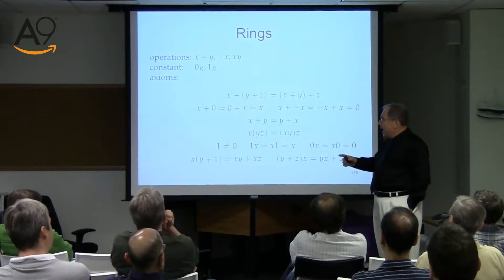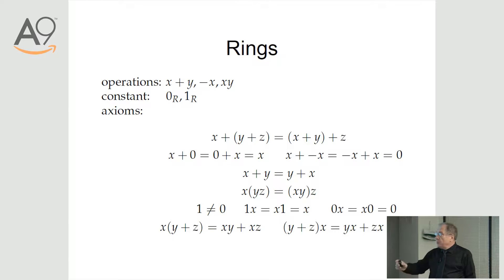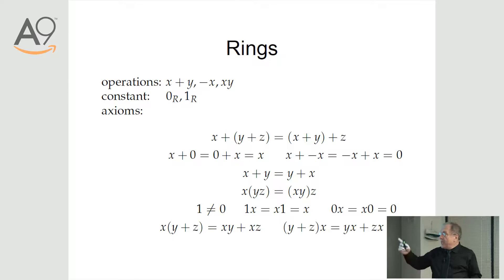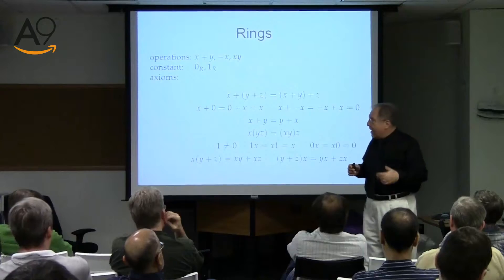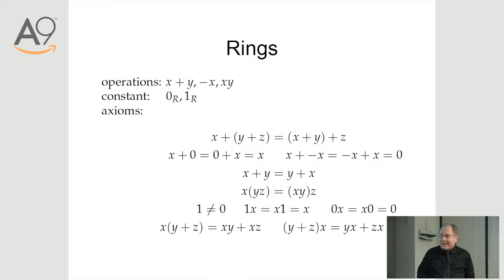Let us see what rings are. Like groups, we describe them by their operations. With groups we had plus and unary minus; we still have them. Every ring is an additive group with operation plus, and moreover it's an abelian group — plus always commutes. There are no rings with non-commutative plus. On top of that, we have multiplication: x times y, the third operation.